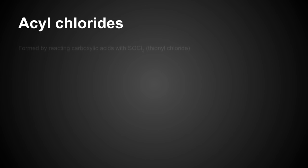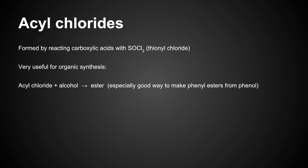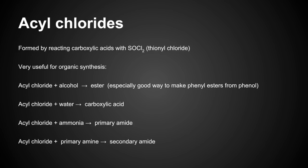Moving on to acyl chlorides. We make acyl chlorides by reacting carboxylic acids with SOCl2 thionyl chloride. They're really useful in organic synthesis because you can make lots of different things from them. You can make an ester: acyl chloride with alcohol makes an ester. That's a really useful method because if you take phenol and a carboxylic acid to try and make a phenyl ester, it's quite difficult because they don't really react. We can make carboxylic acids from acyl chlorides by reacting them with water. We can turn them into primary amides by reaction with ammonia. We can make secondary amides by reacting the acyl chloride with a primary amine, and tertiary amide by reacting with a secondary amine.